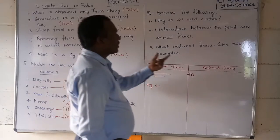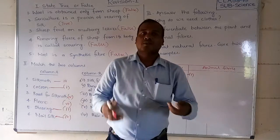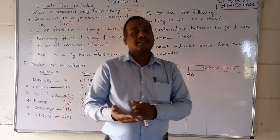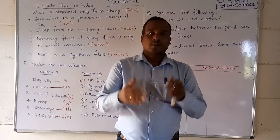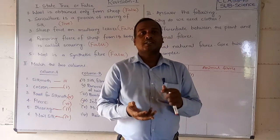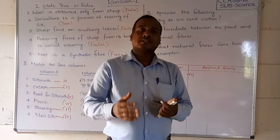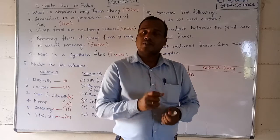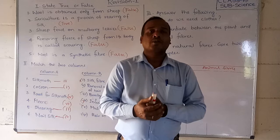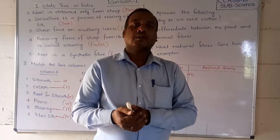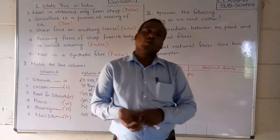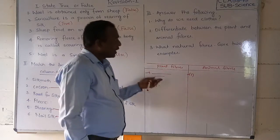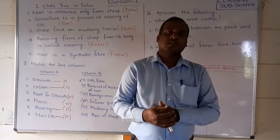Third question: what are natural fibers? The fibers which we get from nature — meaning from plants and animals — are called natural fibers. Natural fibers are classified into two types: plant fibers, obtained from plants, and animal fibers, obtained from animals. Examples of natural fibers are wool, silk, cotton, hemp, and jute. Thank you friends, I hope you have understood, and in the next video we will discuss the next chapter.